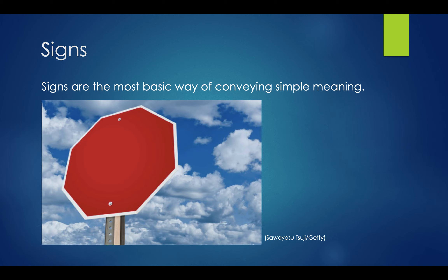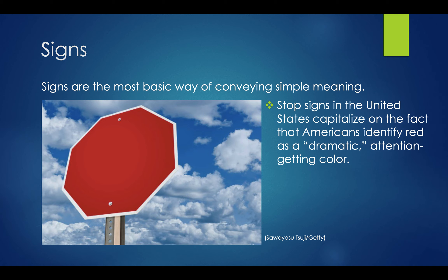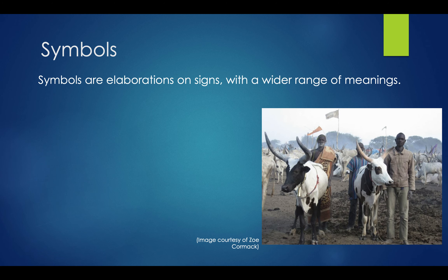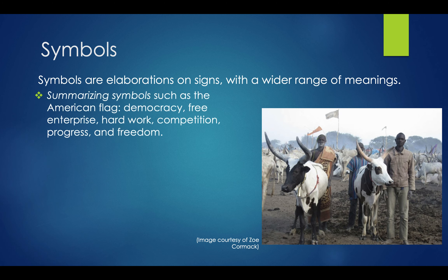Signs are the most basic way of conveying simple meaning. For example, stop signs are always red, always octagons, with bright white writing — a dramatic attention-getting color. Symbols are elaborations on signs that often have a wider range of meaning. Symbols for the U.S. might include the American flag, which symbolizes freedom, democracy, free enterprise, hard work, competition, progress, individualism, and so on. We talk about those core cultural values tied into particular symbols.